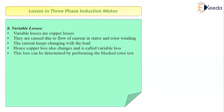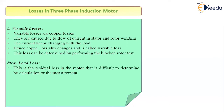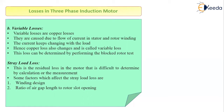Variable losses can be determined by performing the blocked rotor test. The blocked rotor test and no-load test will be covered in the coming videos. There is one more loss called the stray load loss, which is a residual loss in the motor that is very difficult to determine by calculation or measurement. Certain factors affect stray load loss: winding design, the ratio of air gap length to rotor slot opening, and air gap flux density. Generally, stray load losses are assumed to be 10% of the total losses.